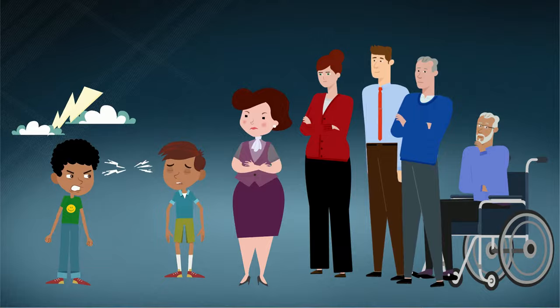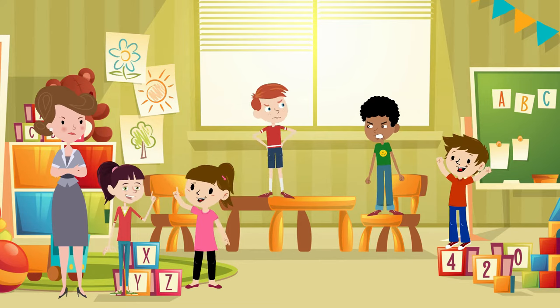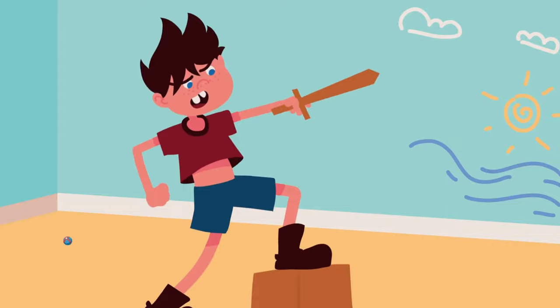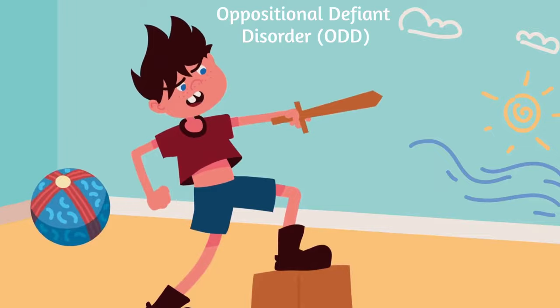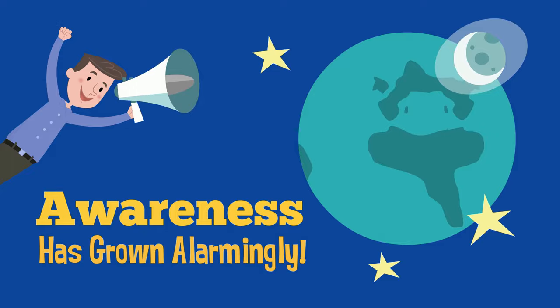We all know that disobedience is an increasingly common problem in the school environment, which directly affects children's development and compromises their learning. It can be linked to several factors, including oppositional defiant disorder. ODD is little talked about, but awareness has grown alarmingly within society in recent years.